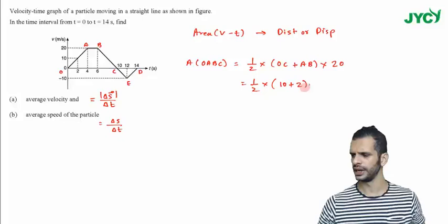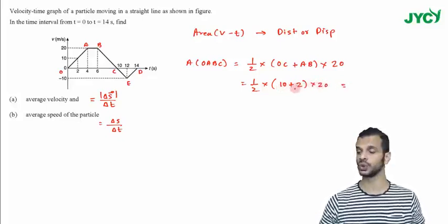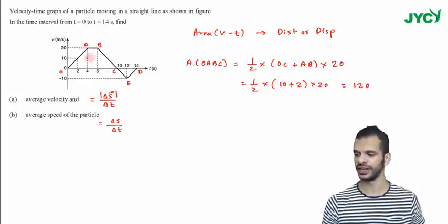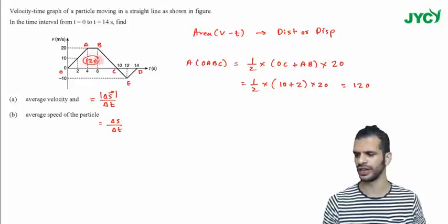2 into 20. So I get half of 10 plus 12, 12 into 10, it is 120. So I get 120. So area of this particular graph is 120.